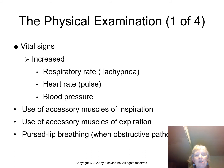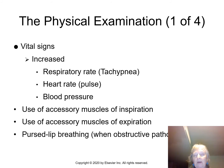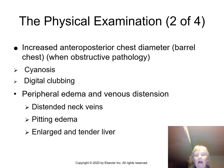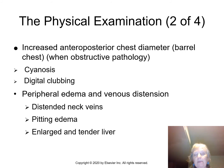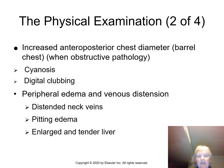Vital signs show increased respiratory rate, increased heart rate, and increased blood pressure. Accessory muscle use is noted — remember, expiration should always be passive. Physical exam findings include pursed-lip breathing, barrel chest in obstructive patients, cyanosis, and digital clubbing, which results from hypoxia. Because of the thickened alveolar-capillary membrane, these patients are hypoxic due to impaired diffusion. Peripheral edema and venous distension are also present.